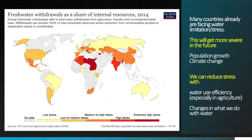Climate change tends to make this problem worse by intensifying the ups and downs of the hydrologic cycle — more extreme events, more floods, more droughts. It also tends to amplify drought cycles in some continental areas, which we'll talk about later in a different video on climate change.